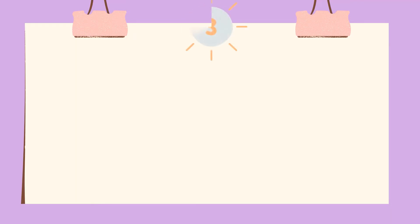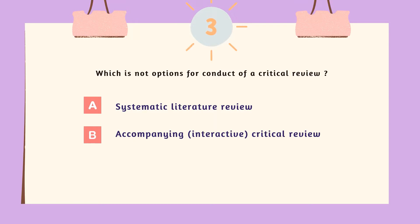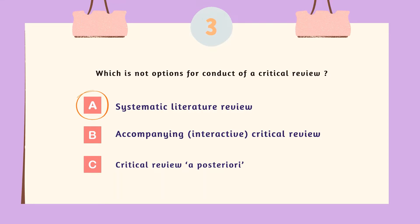And the last question. Question 3: which is NOT an option for the conduct of a critical review? A. Systematic literature review, B. Accompanying interactive critical review, C. Critical review a posteriori. The answer is A, systematic literature review.